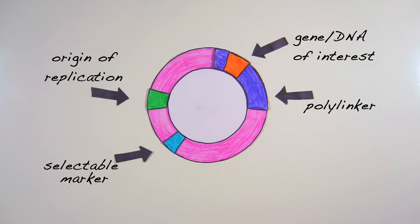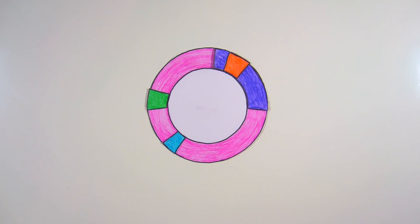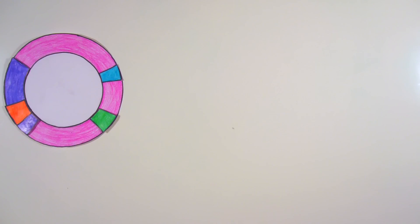These artificial plasmids are used as vectors to replicate or express the particular genes or DNA sequences of interest that have been inserted into the plasmids.